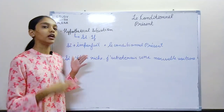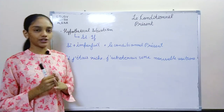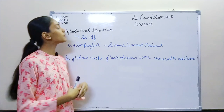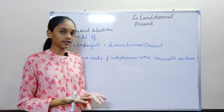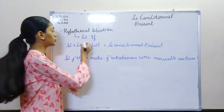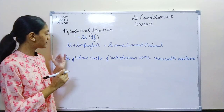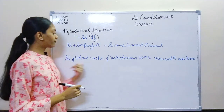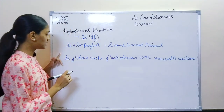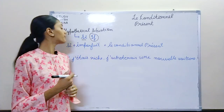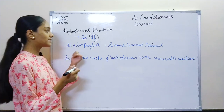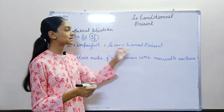Now we will see in what conditions we use conditional present. The first one is a hypothetical situation — an imaginary situation which we express with the word si, which means 'if.' Here I have taken an example: 'If I was rich, I would have bought a new car.' This is a hypothetical situation. The structure is: si plus imparfait plus conditional present.